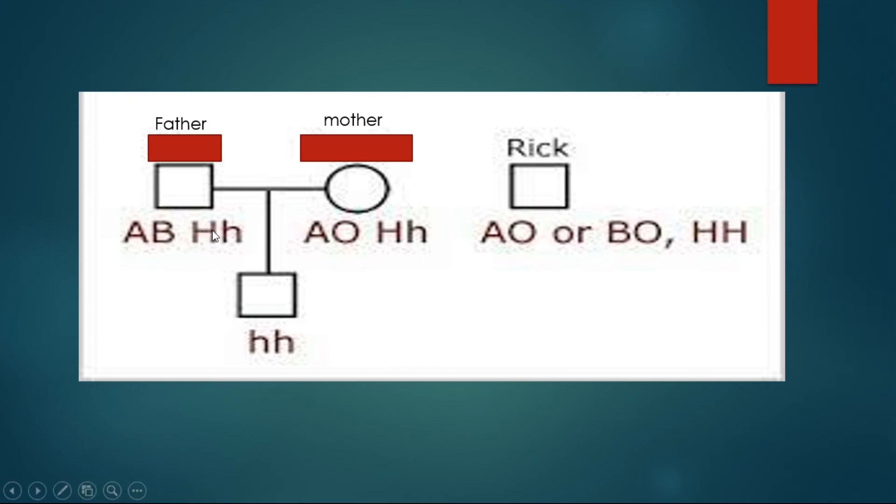Now come to the mother. On chromosome 9, on one chromosome 9 she has antigen A, and on the other is the gene for no antigen. So her blood group is A. And on chromosome 19 she has one gene for H antigen and one gene is mutated.